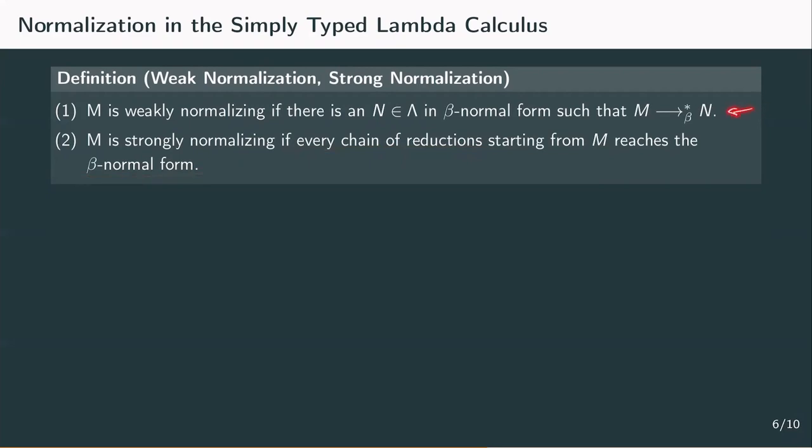Weak normalization only meant that there exists a reduction path that reaches the normal form, but not necessarily all reduction paths do that. In fact, there might be some paths that go on infinitely.